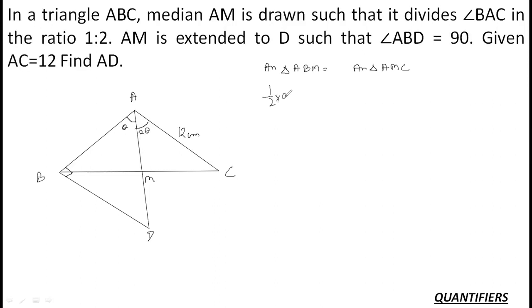I know that area of triangle ABM is equal to area of triangle AMC. What is the area of a triangle? Half into x into y into sin theta. This is the angle with us. Let's say this side is x and let's say this side is y. Now, what is the area of triangle ABM? Half into x into y into sin theta, which is equivalent to the area of this triangle, which is half into x into 12 into sin 2 theta.